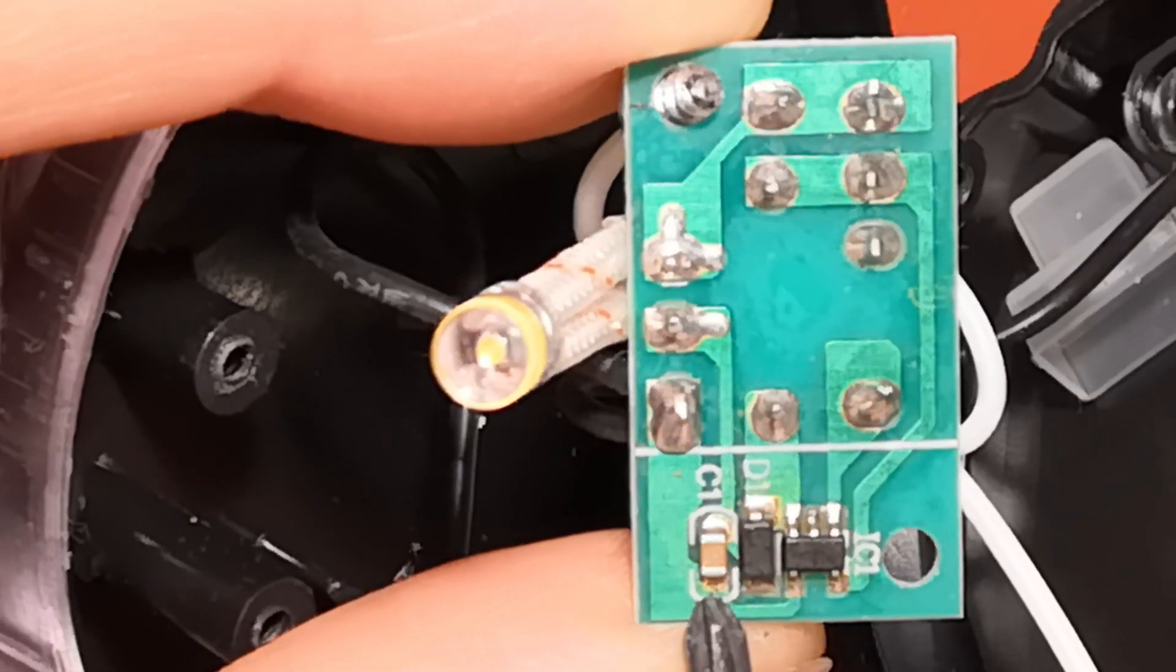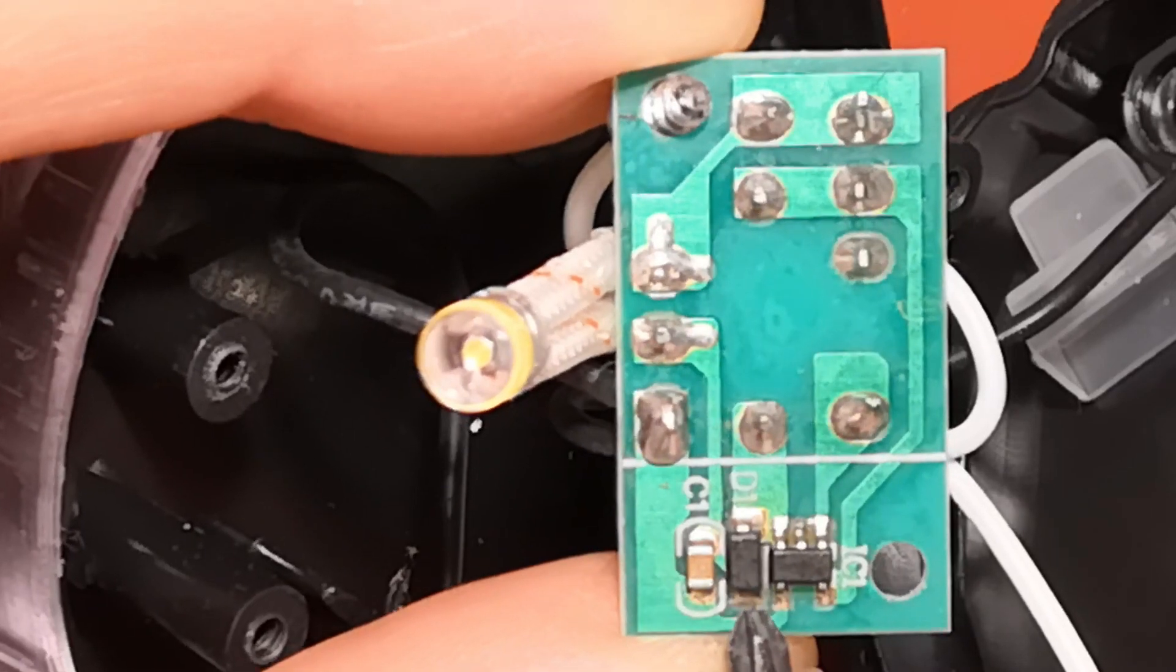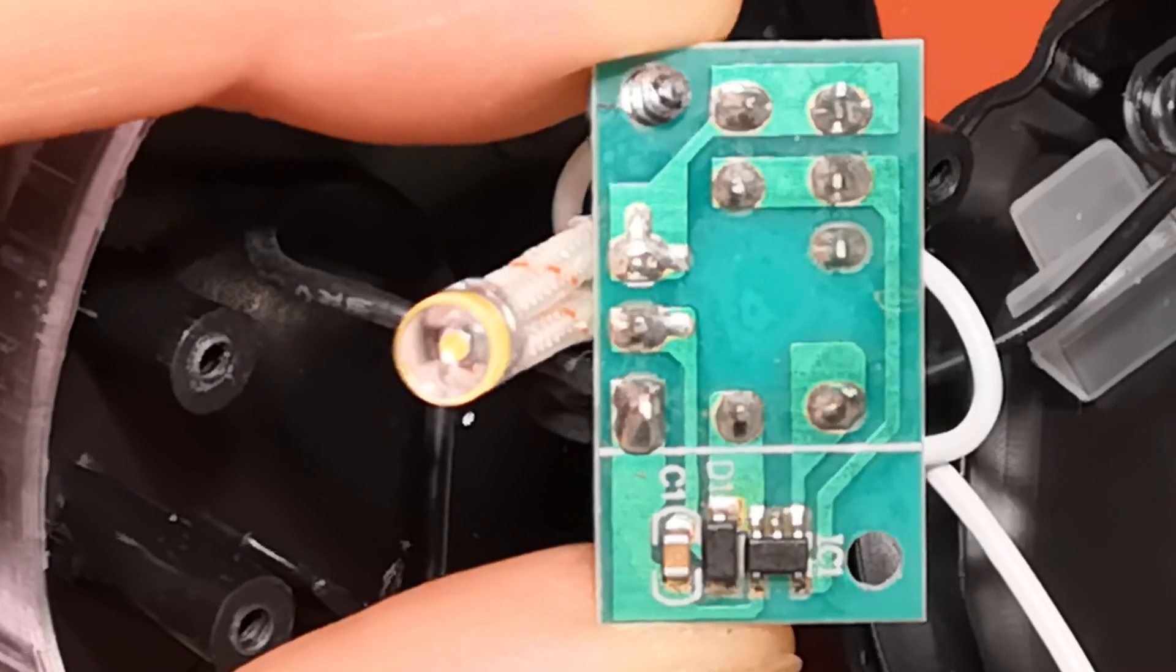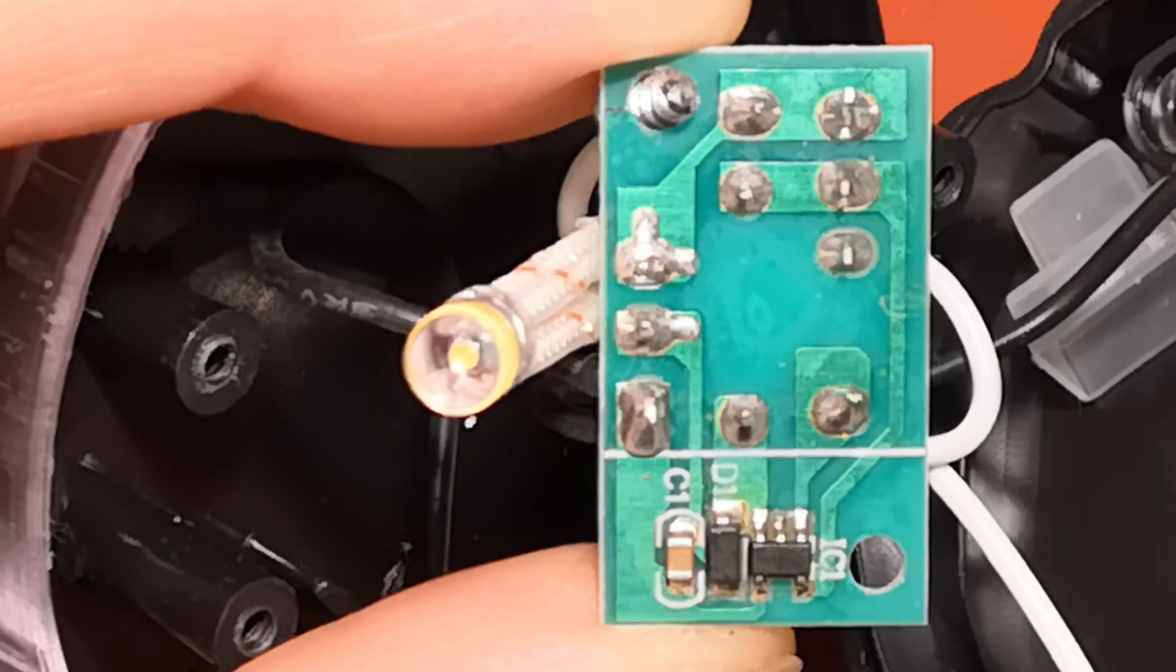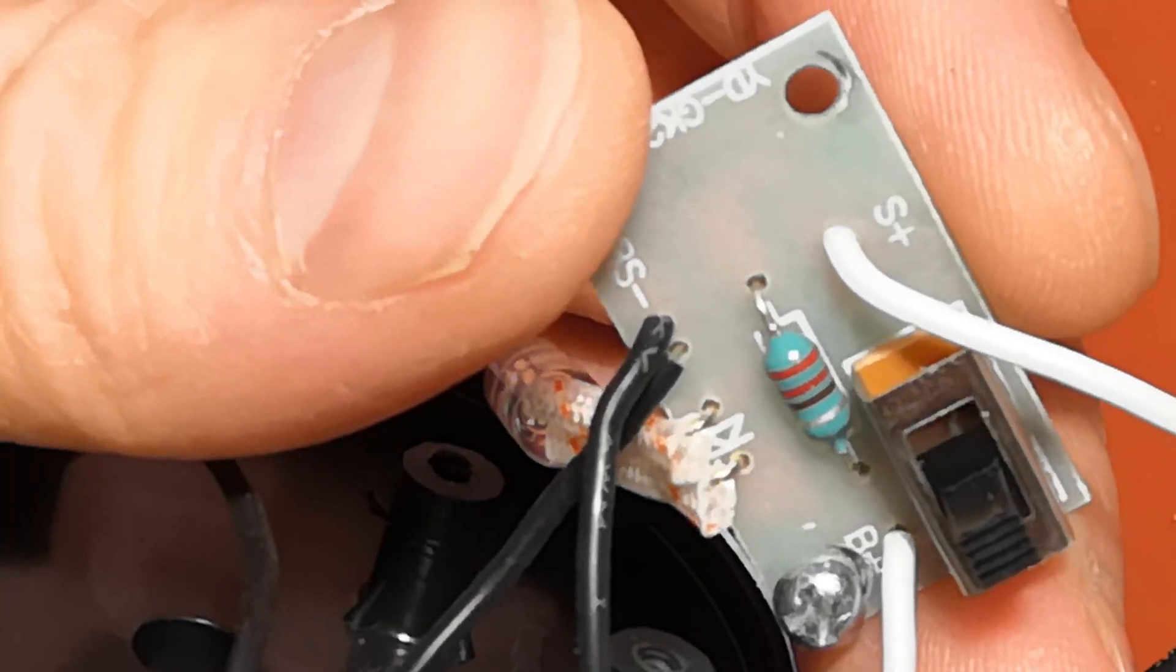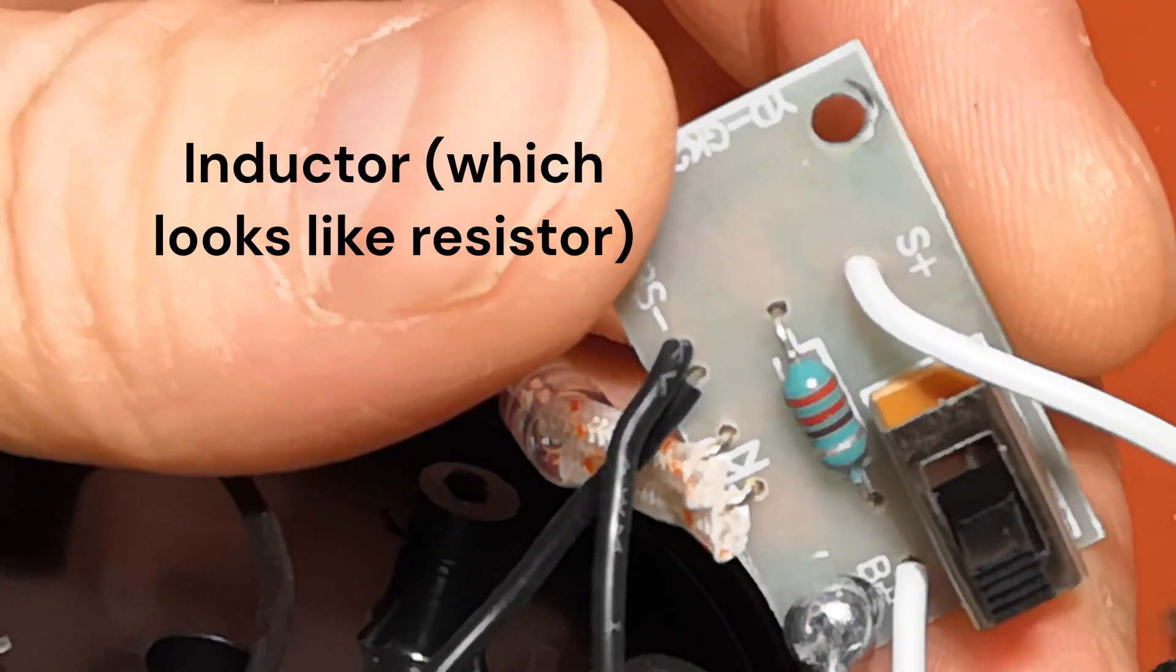Besides the LED, there's a capacitor, a Schottky diode, and some unlabeled microchip. That small microchip contains a microcontroller with a program that makes the LED flicker to simulate a flame. On the other side, there's only a 220 ohm resistor and a switch.